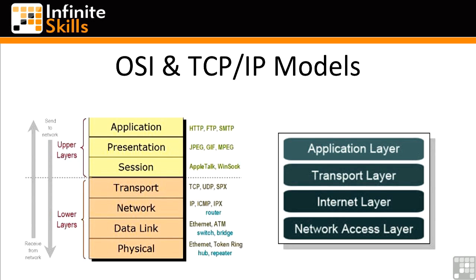The network layer, which is right above that at layer 3, is where IP lives, as well as ICMP and IPX from the IPX-SPX suite of protocols from Novell. Routers operate at layer 3. Layer 4, above that, is the transport layer — that's TCP, UDP, and SPX, again from the IPX-SPX suite of protocols.